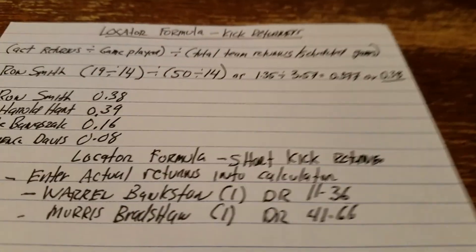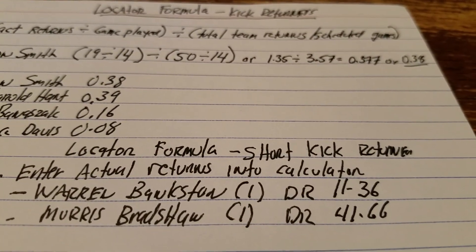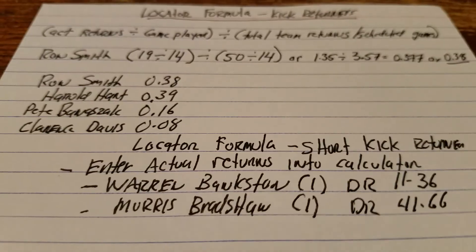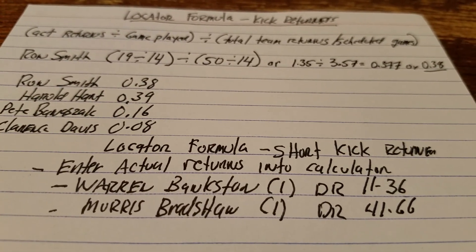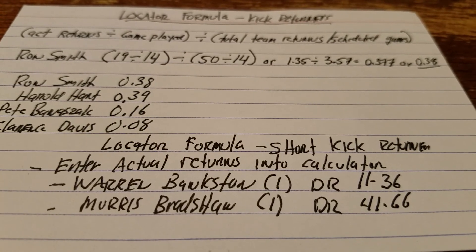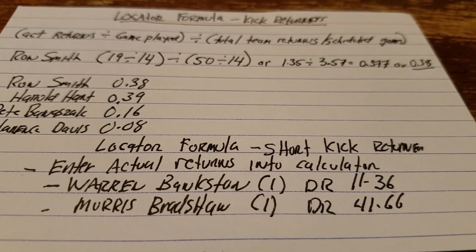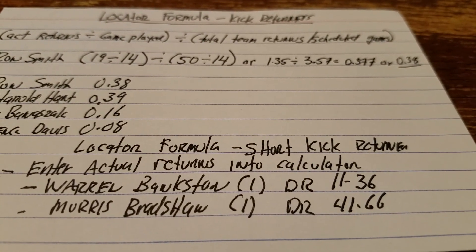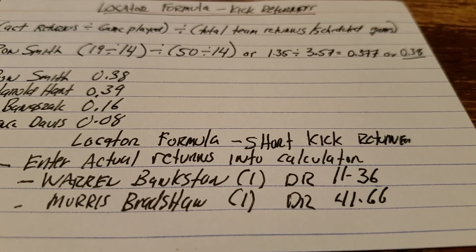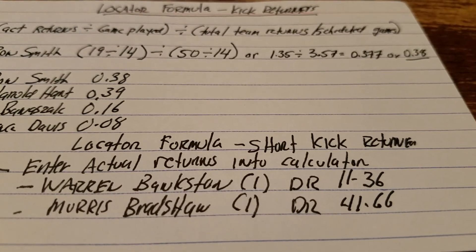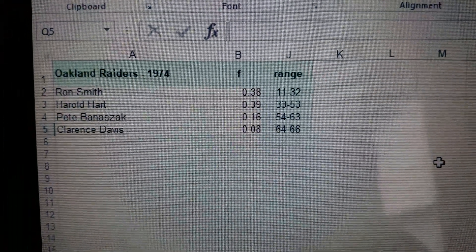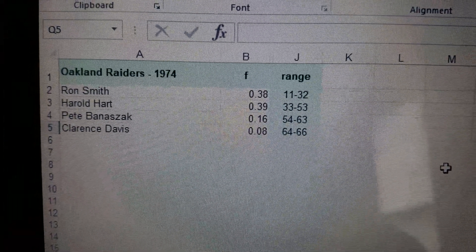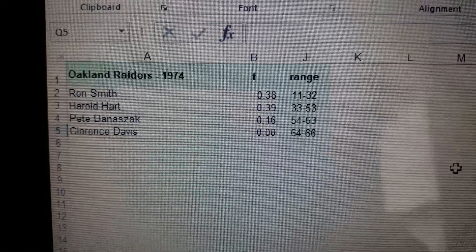Now for the locator formula for short kick returners, it's real simple. Warren Bankston had one return, Morse Bradshaw had one return. So that equals dice rolls 11 through 36 and 41 through 66. Let's go to the computer. Here it is when I plug it into the dice range calculator.